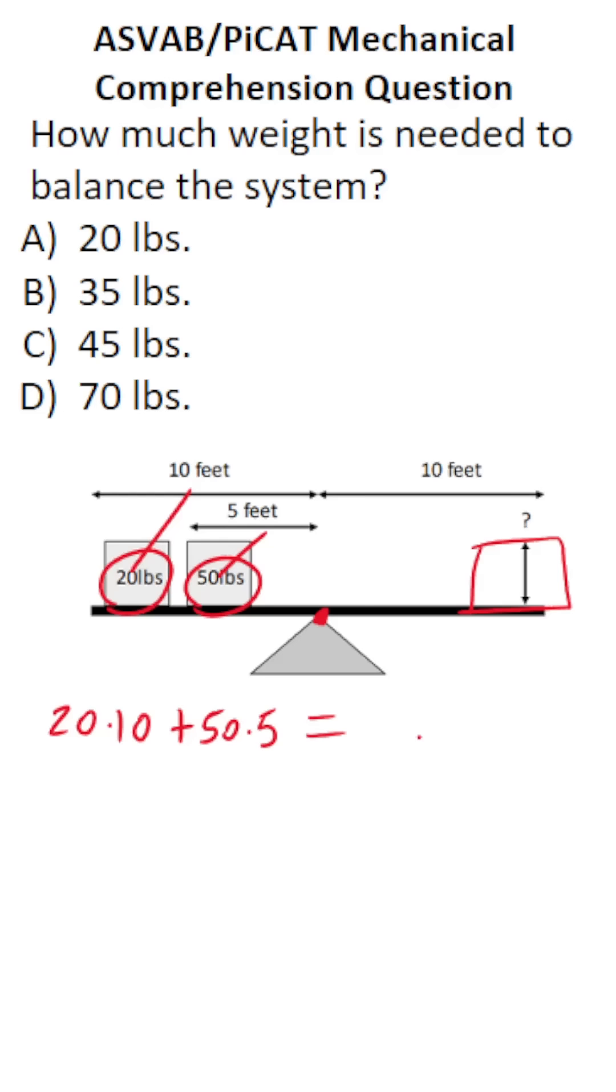This is going to be equal to this weight, which is unknown. So let's call it x times the distance it is from the center of the fulcrum, which is 10. So all we have to do is solve this equation for x.